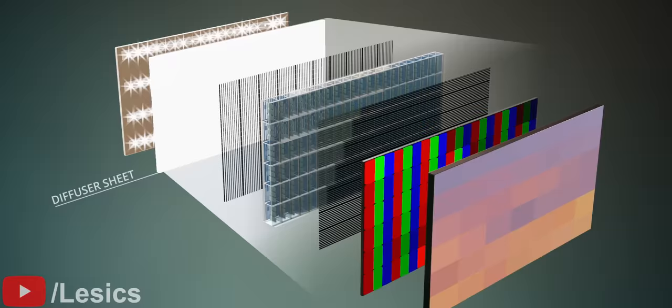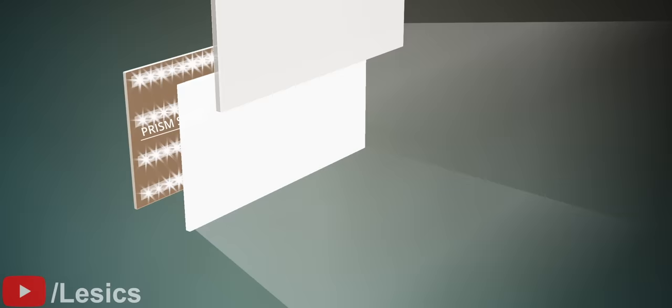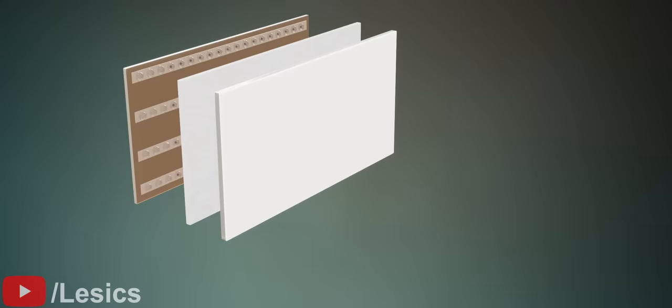However, the diffuser sheet spreads light in all directions, which reduces brightness in the desired direction. To solve this issue, let's add a prism sheet in front of the diffuser sheet. The prism sheet concentrates light in a forward direction. This is the actual construction of the LED display.